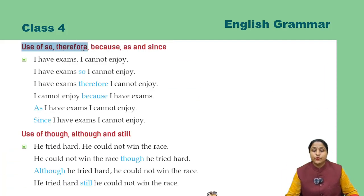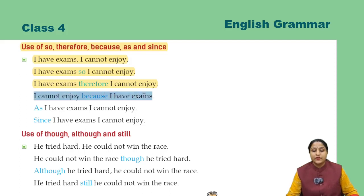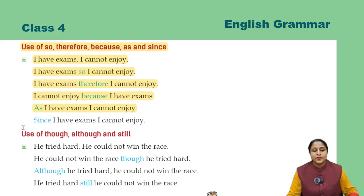Use of 'so', 'therefore', 'because', 'as', and 'since'. I have exams, I cannot enjoy. I have exams, so I cannot enjoy — meri exams hain, is liye mein enjoy nahi kar sakta. I have exams, therefore I cannot enjoy. I cannot enjoy because I have exams — mein enjoy nahi kar sakta kyunki meri exams hain. As I have exams, I cannot enjoy. Inka use kaafi had tak similar hota hai. Since I have exams, I cannot enjoy — matlab, jab tak meri exams hain, tab tak mein enjoy nahi kar sakta.